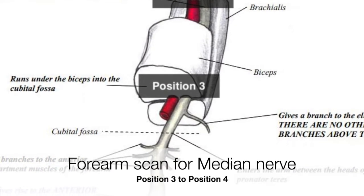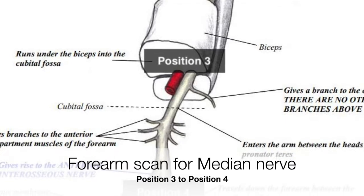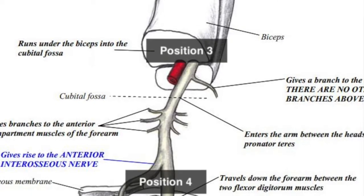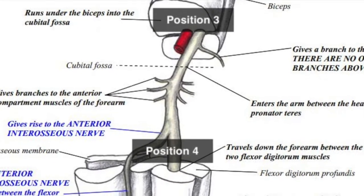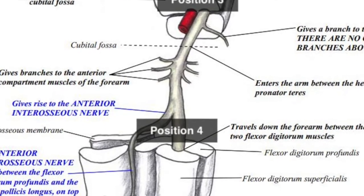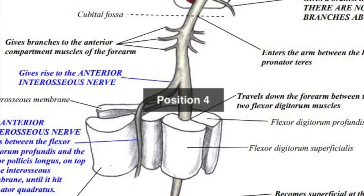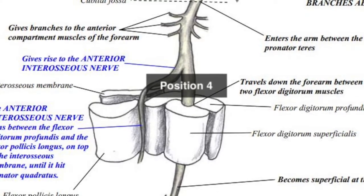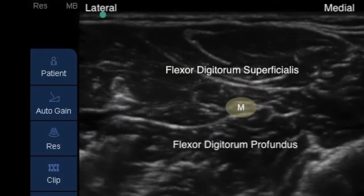Finally, a continued scan of the median nerve from position 3 to position 4 reveals the positioning of the median nerve between the flexor digitorum superficialis and flexor digitorum profundus. In this image, the median nerve can be seen sandwiched between these two muscles.